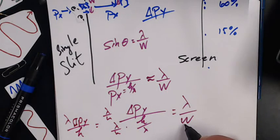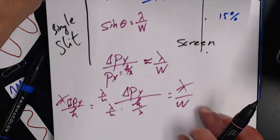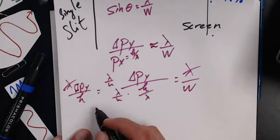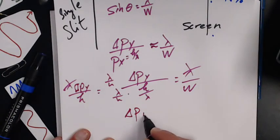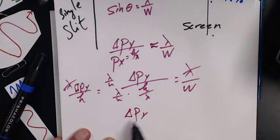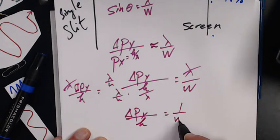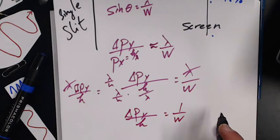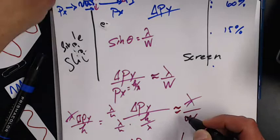I end up with the change in momentum in the y-direction, my uncertainty in the momentum in the y-direction, over h is going to equal one over the slit width. Now this is related because this is pretty tenuous.